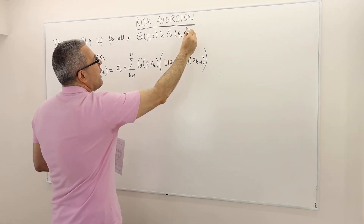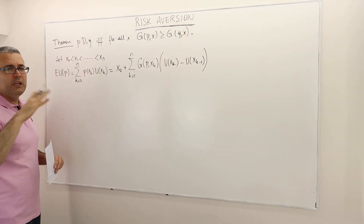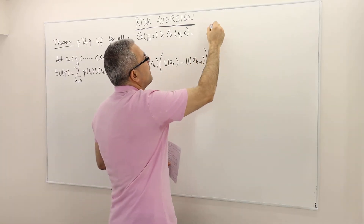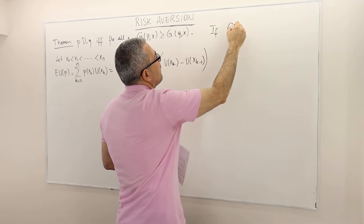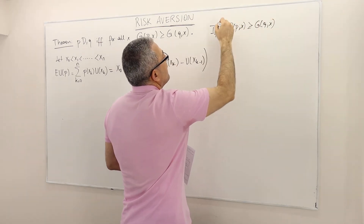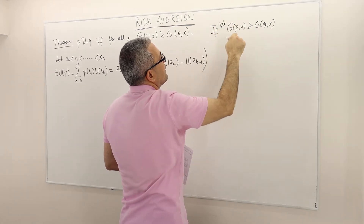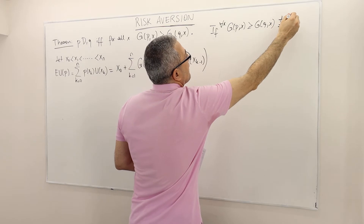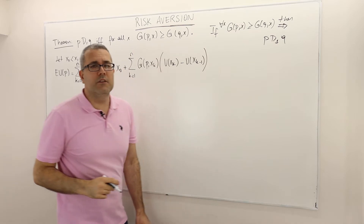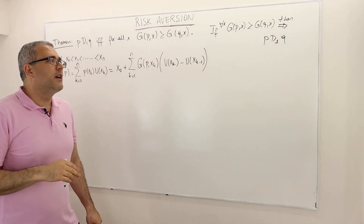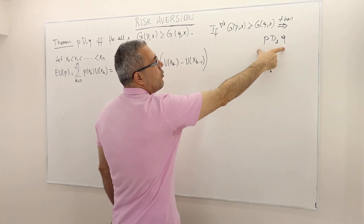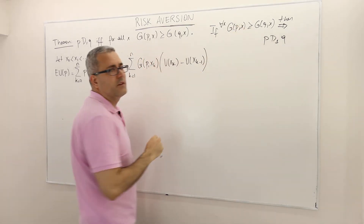So what I'm going to prove first — I'm going to ignore the second part — I'm going to prove the following statement: if G of P(X) ≥ G of Q(X) for all X, then P first-order stochastically dominates Q. If we have time, I'll prove the second part, meaning P D1 Q implies this inequality.